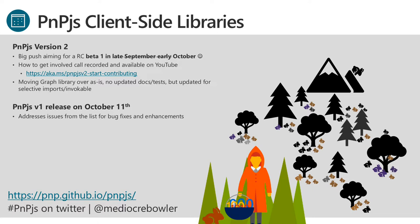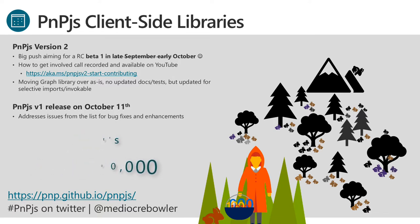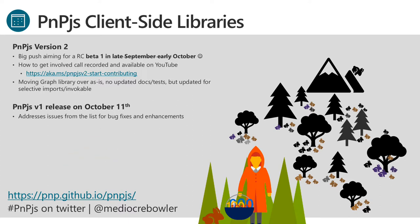Docs are at pnp.github.io/pnpjs. Hashtag pnpjs on Twitter. You can follow me at MediocreBowler. We crossed four billion requests in a single month for PNP JS in September for the first time — a really amazing milestone and a testament to all the great work the community is doing. We're finally getting some more formal support internally around the libraries, so excited to see that. We'll be celebrating a couple of milestones in November.